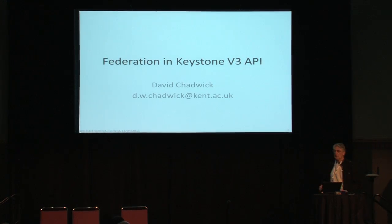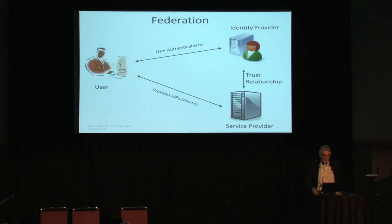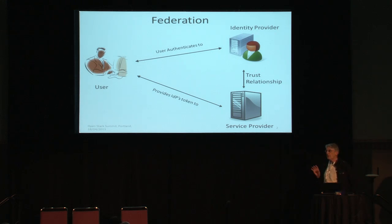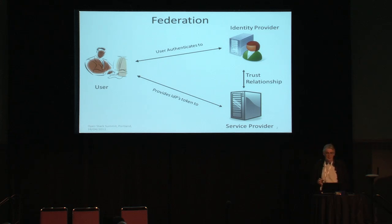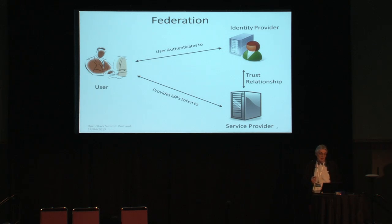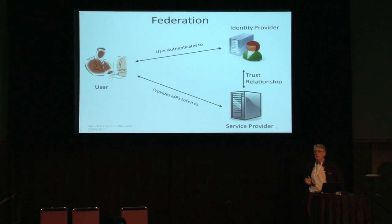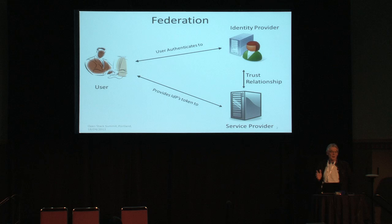We're going to look at federation in Keystone v3 API and what we've done in the last few months since I last gave a talk on federation. Federation, just for those new to the topic, means that the service provider does not authenticate the user. The service provider has a trust relationship with an identity provider, the user authenticates to the identity provider, which provides a cryptographic assertion token to the service provider. Because the service provider trusts the identity provider, it accepts that the user has been authenticated correctly.